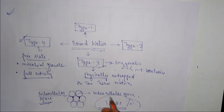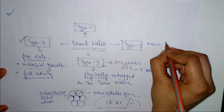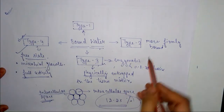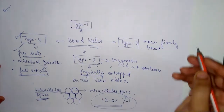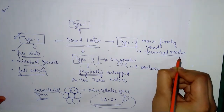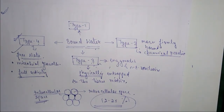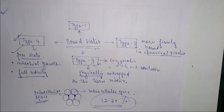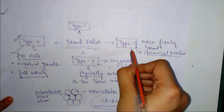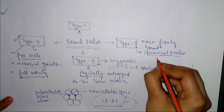Type 2 bound water is more firmly bound compared to Type 3. It is responsible for various chemical reactions — like the breakdown of carbohydrates, fats, and lipids, and various other chemical reactions taking place in food over time, such as retrogradation. All these chemical reactions in food systems are functions of Type 2 bound water. If we remove Type 2 water, we can reduce the moisture content to around 3 to 7 percent.